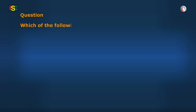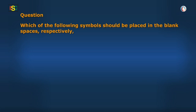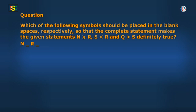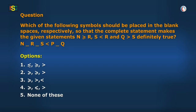Next question: which of the following symbols should be placed in the blank spaces respectively so that the complete statement makes the given statements — N greater than or equal to R, S less than R, and Q greater than S — definitely true? The statement is: N dash R dash S, S less than P, P dash Q. The options are on the screen.